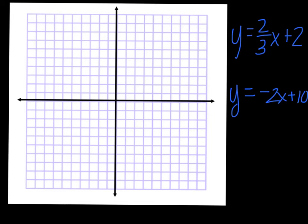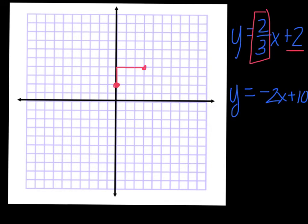We're going to try another one. I'm going to graph this system of equations and see where they cross. Let's start with the top equation. Here's your y-intercept — so I'm going to go up two and put my y-intercept. Here's my slope, two-thirds. Remember, it's rise over run, so I'm going to go up two, over one, two, three — there's my next point.